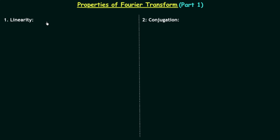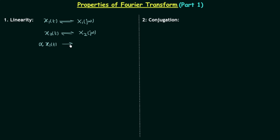I will first give you the property and then we will prove it. Let's say there is one signal x1(t) and the signal is having the Fourier transform X1(jω). There is another signal x2(t) and this signal is having the Fourier transform X2(jω). Now we multiply alpha to the first signal x1(t); the Fourier transform X1(jω) will also get multiplied by alpha.